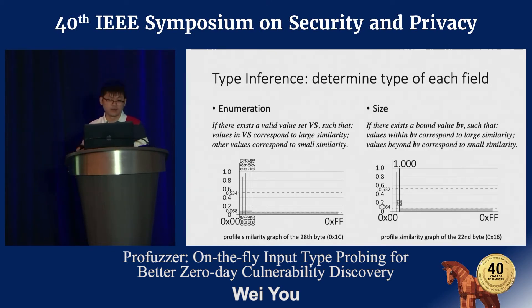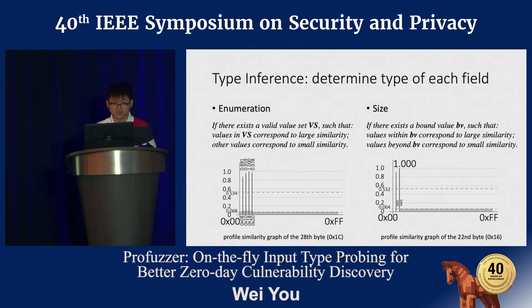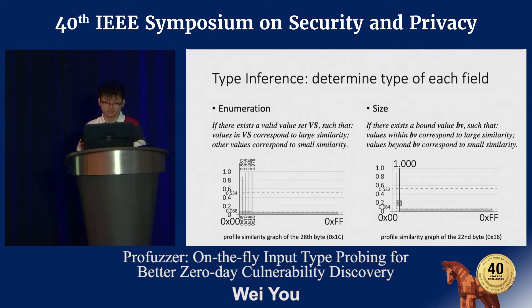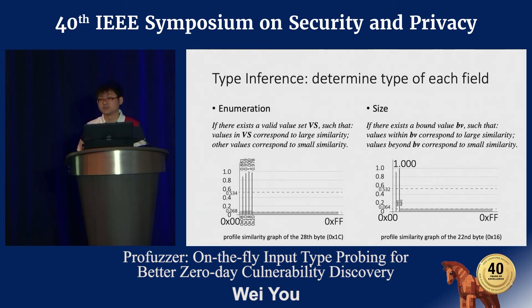For a size field, there exists a bound such that different values within the bound correspond to different similarity scores larger than the mid-range, while values beyond the bound have similarity scores smaller than the mid-range. As shown in the profile similarity graph of byte 22, which is a size field, values smaller than the bound have a relatively high similarity score since the input is long enough for the data to be read, while values larger than the bound have a very small similarity score, indicating early termination.